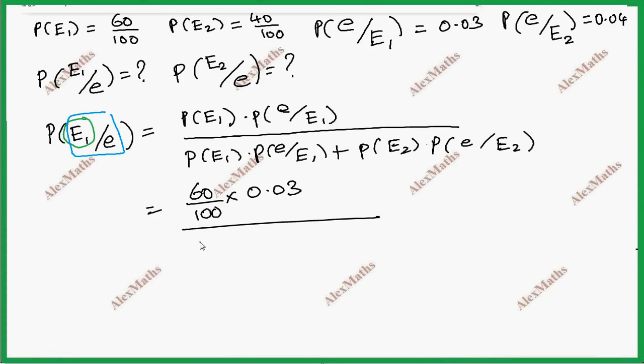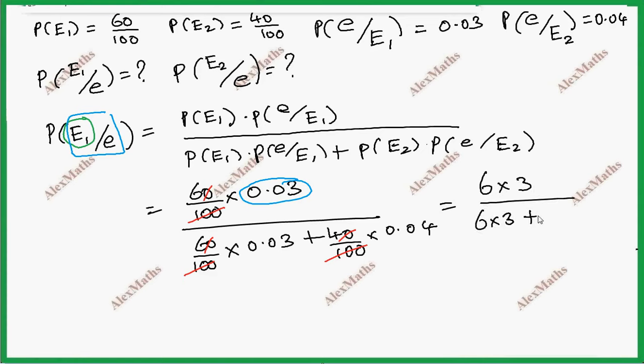Whole divided by P of E1 is 60 by 100 times 0.03 plus P of E2 is 40 by 100 times 0.04. Now we will cancel the denominators. If we have decimals, we can multiply by 100. So 6 times 3 is 18. This becomes 18 divided by 18 plus 16, total 18 by 34. Cancel by 2: 9 by 17. So P of E1 given E is 9 by 17.